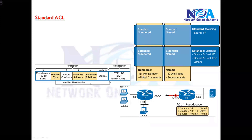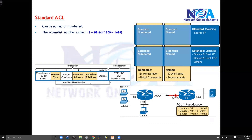First let's see the standard, the basic one. The standard ACL can be named and numbered. You can identify it either with a name or number. If you use a number between 1 to 99, the router will automatically understand it is a standard ACL.